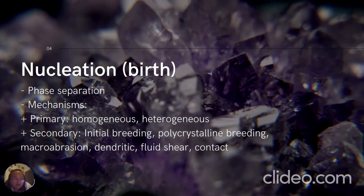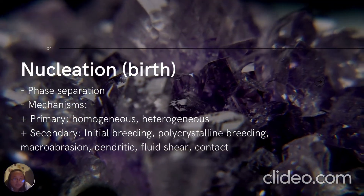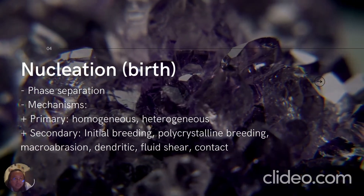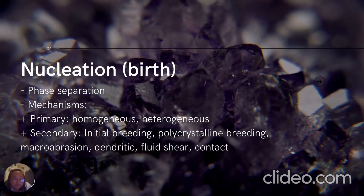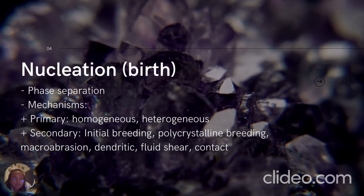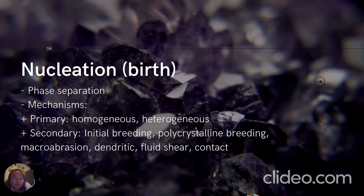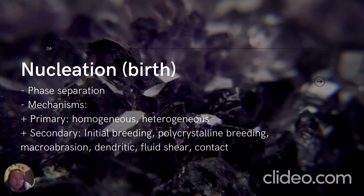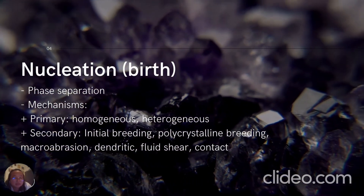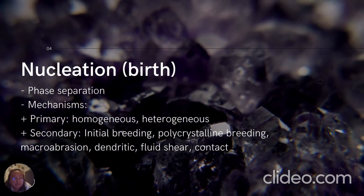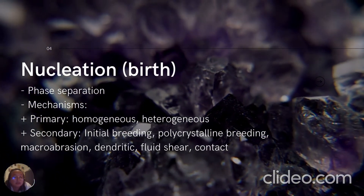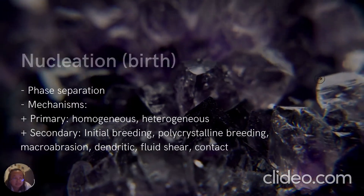There are a couple of different mechanisms for nucleation, which include primary and secondary. There are homogeneous and heterogeneous nucleation in primary mechanisms, and initial breeding, polycrystalline breeding, macroseparation, dendritic, and contact in the secondary nucleation mechanisms.